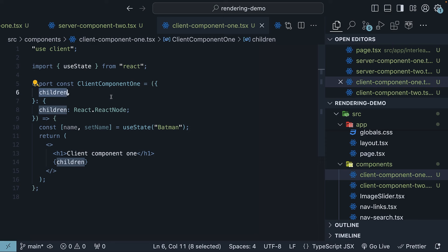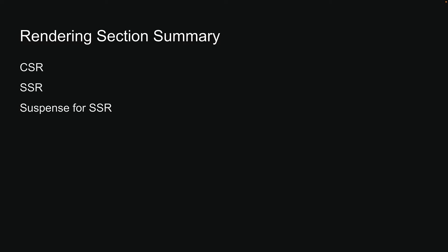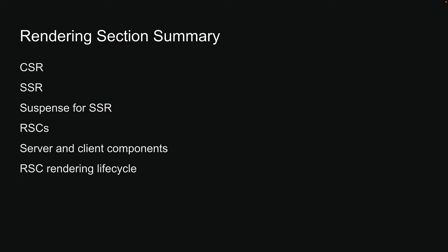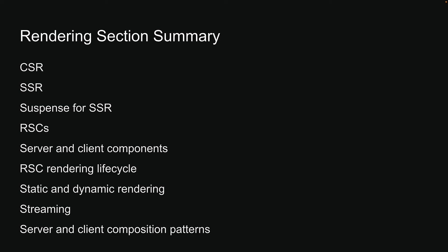That wraps up our second section on rendering in Next.js. We have covered a wide range of topics: client-side rendering, server-side rendering, Suspense for server-side rendering, React server components, server and client components, the rendering lifecycle of React server components, static and dynamic rendering, streaming, and various server and client composition patterns. I hope you now have a thorough understanding of rendering in the Next.js app router. If you're enjoying the playlist, please like, subscribe, and stay tuned for the next section.